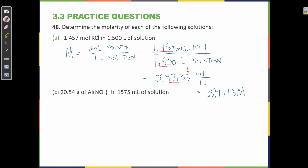Let's do the next one. 20.54 grams of aluminum nitrate in 1,575 milliliters of solution. Remember molarity equals moles per liter. I don't have moles, in this one I have grams. So I have to convert grams to moles, and then put moles over liters. In this case I'm given grams and milliliters as my units. So this is the map I would use. Grams to moles, milliliters to liters, and then I'll divide moles by liters.